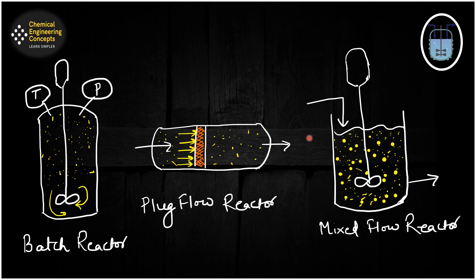For the plug flow reactor, since PFR can be visualized as a flow of small batch reactors — small plugs mixing in the radial direction — all acting as small batch reactors passing in succession through the vessel, whether the fluid is macro or micro the effect will be alike. There will be no difference, so the degree of segregation also does not influence conversion in the case of the plug flow reactor.